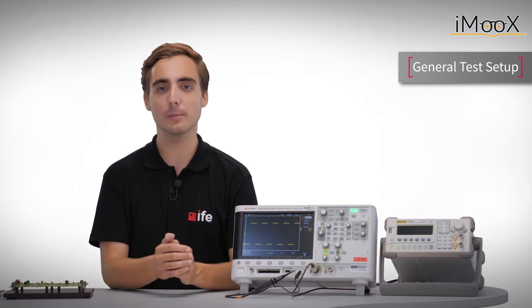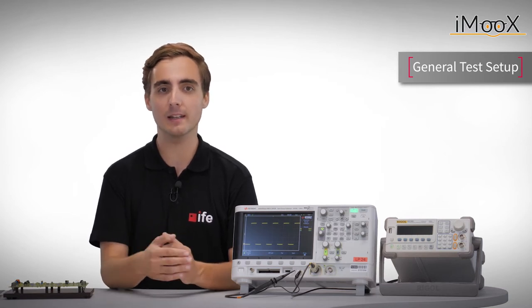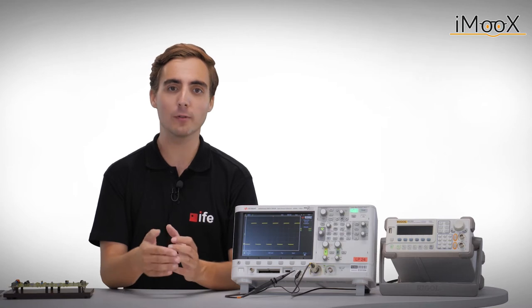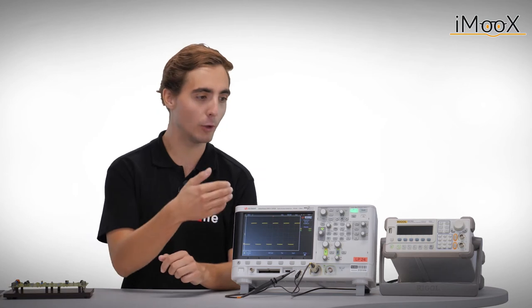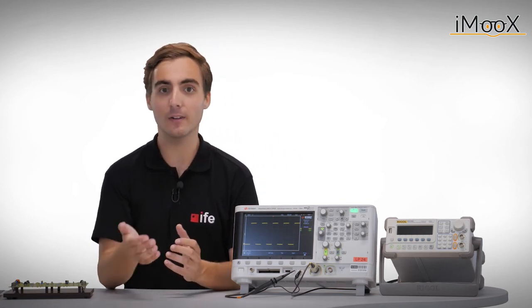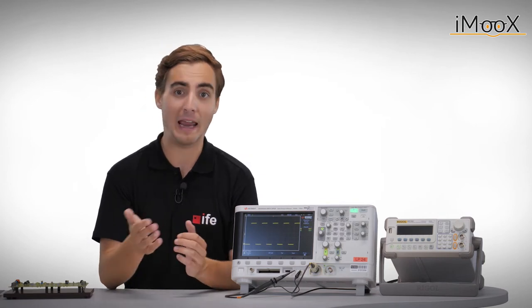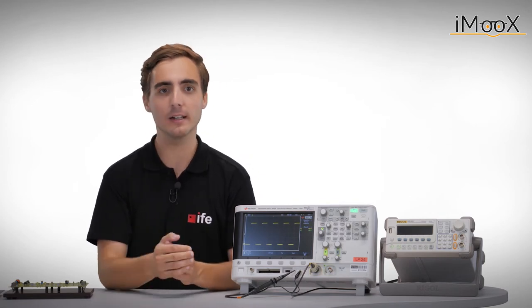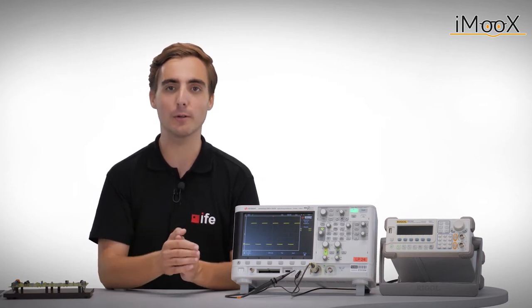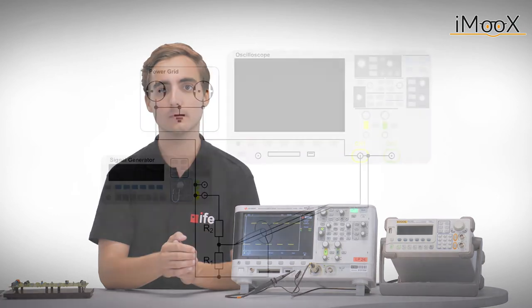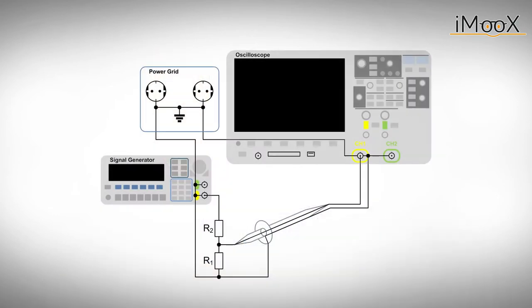Before we start our measurements, a few words have to be said about the test setup in general. We have to take care here, as usually the ground potentials of both scope and power supply are the same and connected together via the power grid. In contrast to a handheld multimeter, which is isolated, the reference potentials of a scope must not be set to any arbitrary potential in general. To emphasize this problem, we investigate this simple test setup.